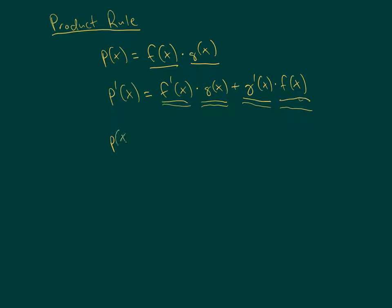Here's an example. Let's say p of x equals x cubed plus 4x, and then your other function, that would be f of x, and g of x, let's say that's x squared minus 1.